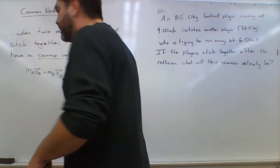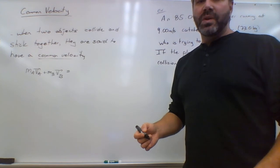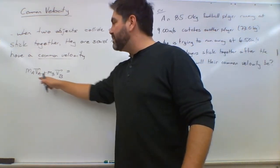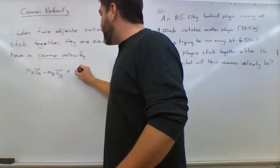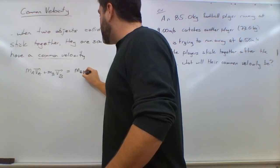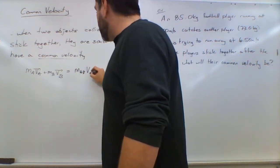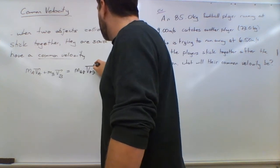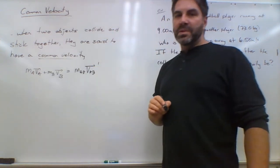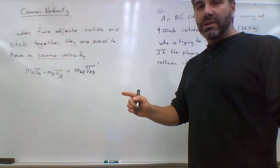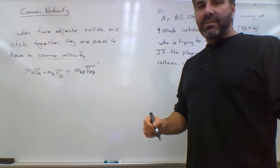But when we go to the right-hand side of the equation, the after situation, I can't have two objects, so express it as MAB, that would be the combined mass of the two objects, and then VAB with the prime representing their common velocity, their single common velocity after the collision.